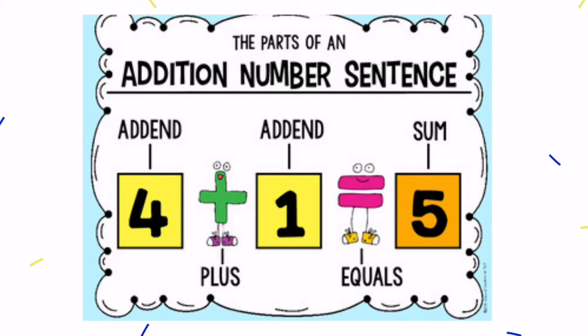The parts of an addition number sentence: 4 plus 1 equals 5. The 5 means the result of counting.